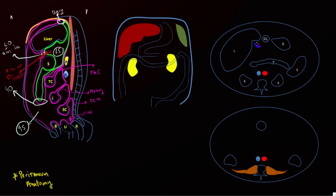Now let's look at peritoneal anatomy on the axial images. On this diagram: D1 is the first portion of the duodenum, G is for stomach, S is for spleen, and we can also see the pancreas, kidneys, liver, portal vein (blue), hepatic artery (red dot), and bile duct (green dot).